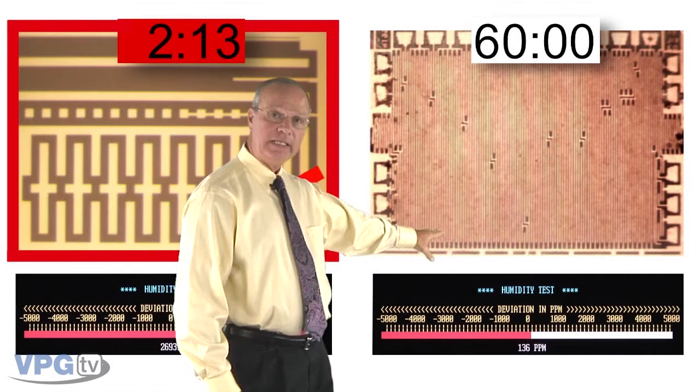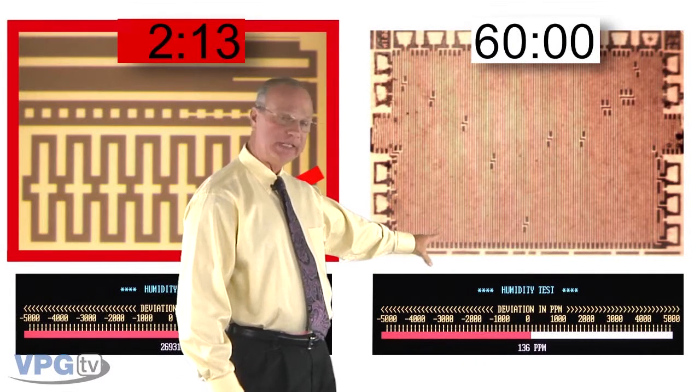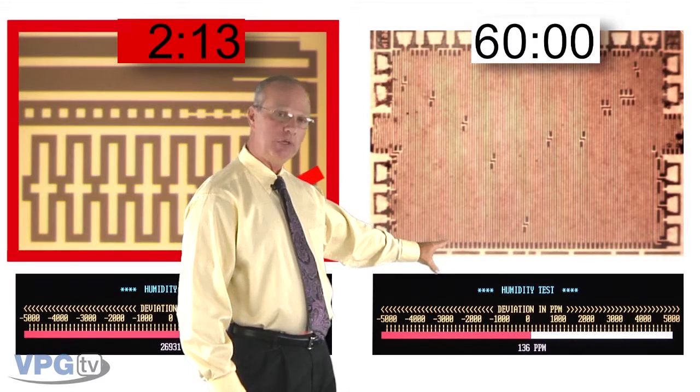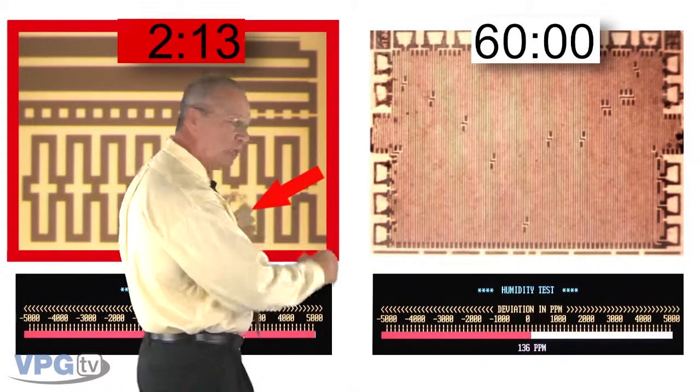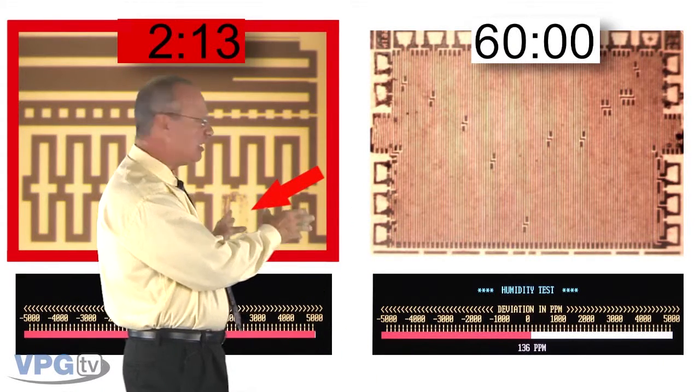As you can see, even after one hour in the humidity test, the foil resistor is unaffected by the moisture. The difference between the two technologies is very obvious.